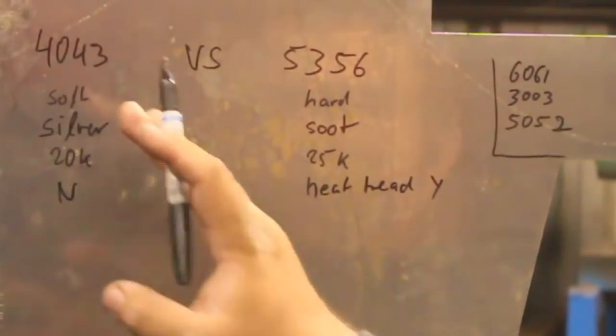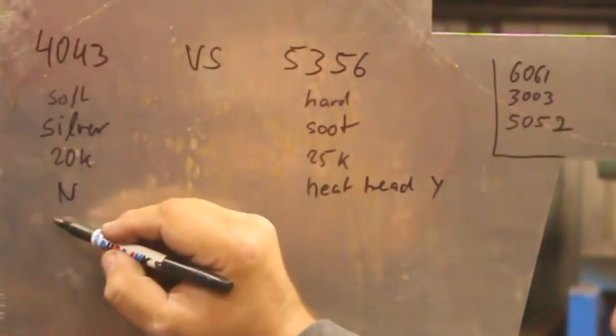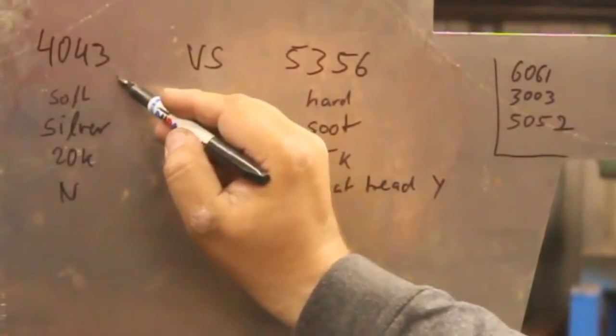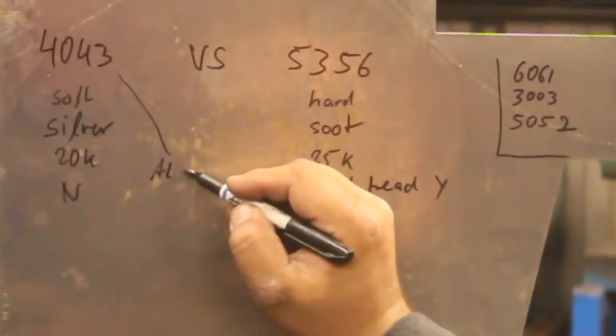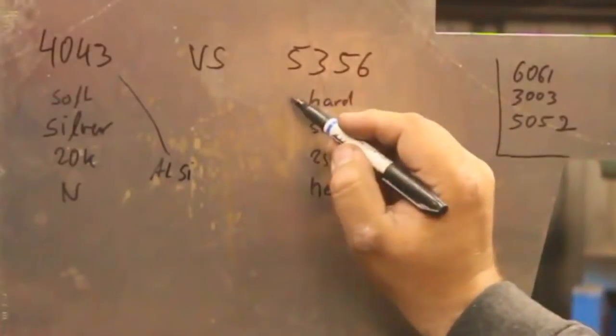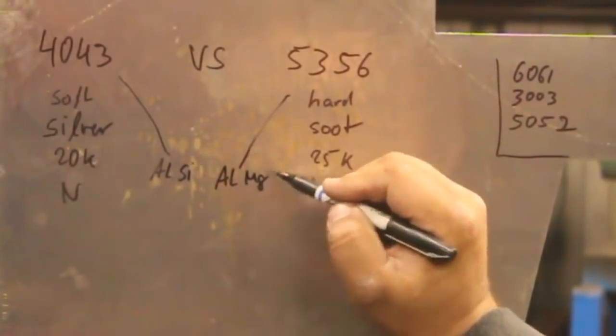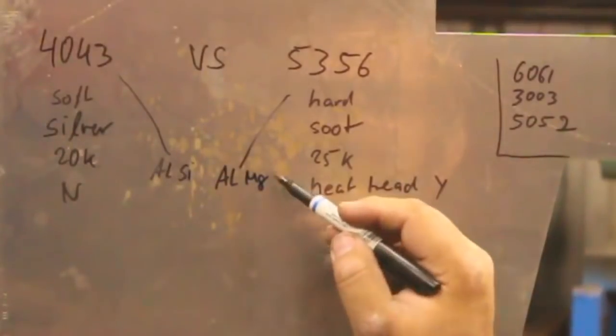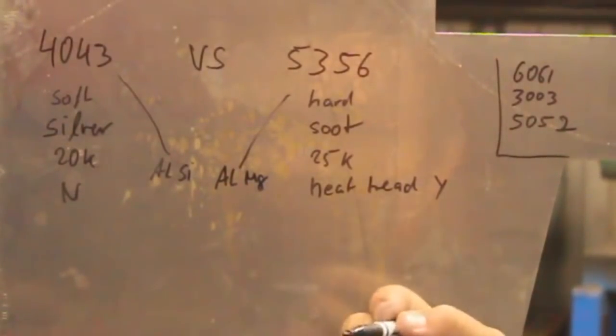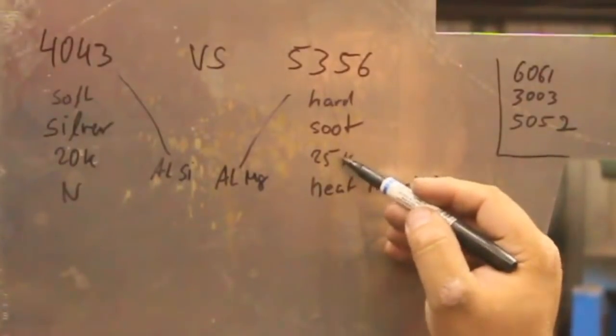So 4043 flows a lot nicer. 4043 is basically aluminum and silicone mixture. 5356 is an aluminum and magnesium mixture. So the magnesium gives it strength, but makes it burn green and sooty.